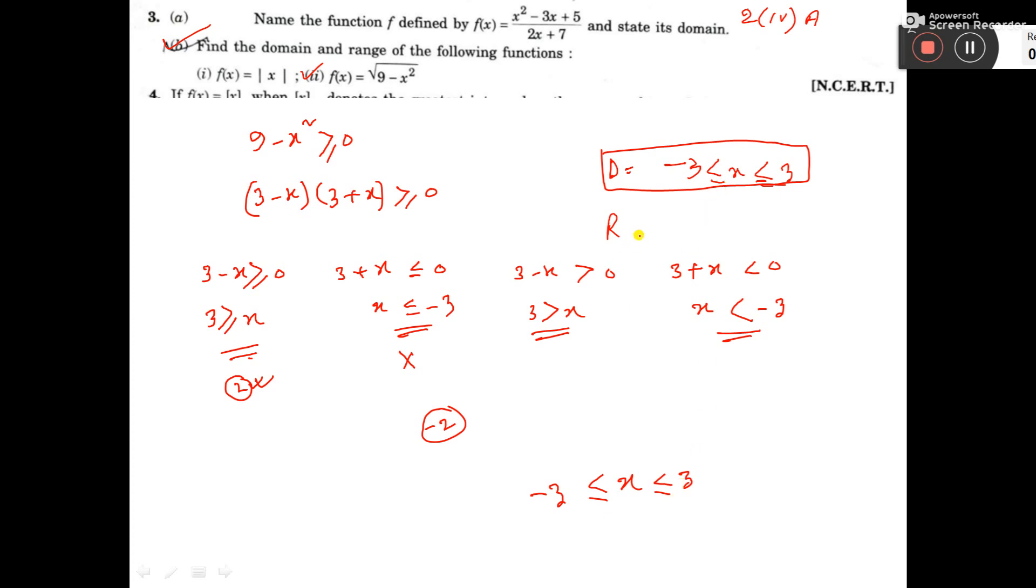That means value of x. So value of x, it is domain and range. Range means the value of y. Actually, to get range, this is the maximum interval of x, minus 3 to 3. So if we put minus 3 here, then minus 3 whole square, 9 minus 9, that will be 0.